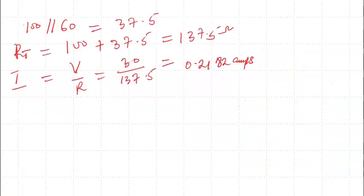So the voltage drop across that combination will come from 37.5 times 0.182, which equals 8.182 volts.